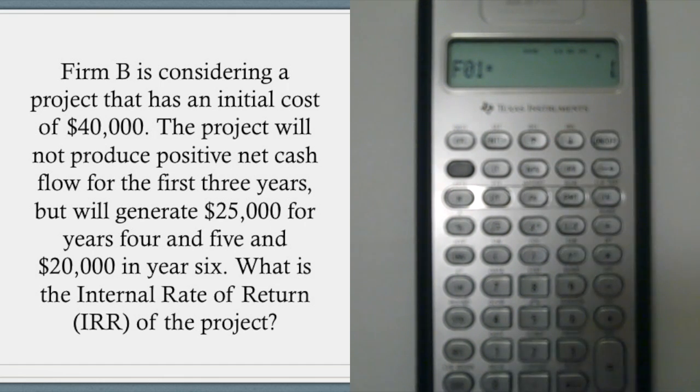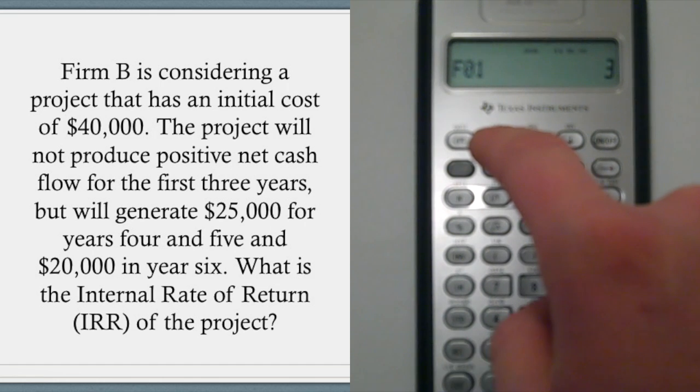And then if you press down, it should say F01, which is the frequency of the cash flow that we just entered. So because it's going to be three years before we get any cash flow, so it's going to be zero for three years, we'll go ahead and enter a three. Enter.